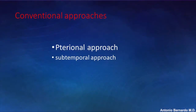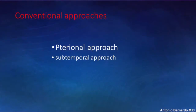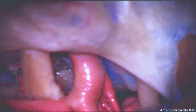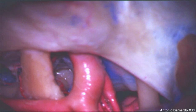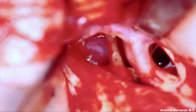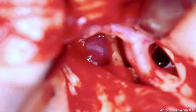Usual approaches for this lesion are the pterion and subtemporal approaches. The two main corridors while doing the pterion approach are the carotid oculomotor window and occasionally the optic carotid window. Both corridors have very limited exposure of the paracella area and the dorsum cellar region. Wider exposures are needed for complex lesions at the paracella area and the dorsum cellar region.